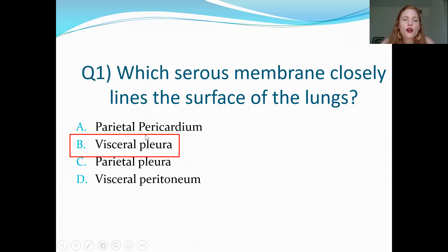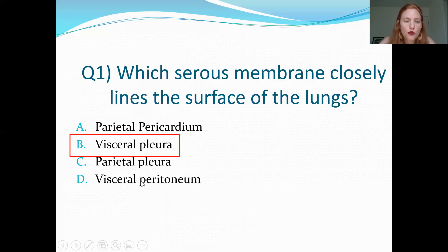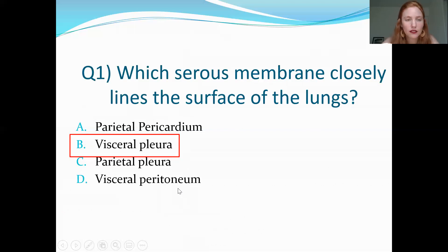The pericardium is found around the heart — 'peri' meaning around, 'cardium' meaning heart. The peritoneum is around the intestines, located in the abdominopelvic cavity.